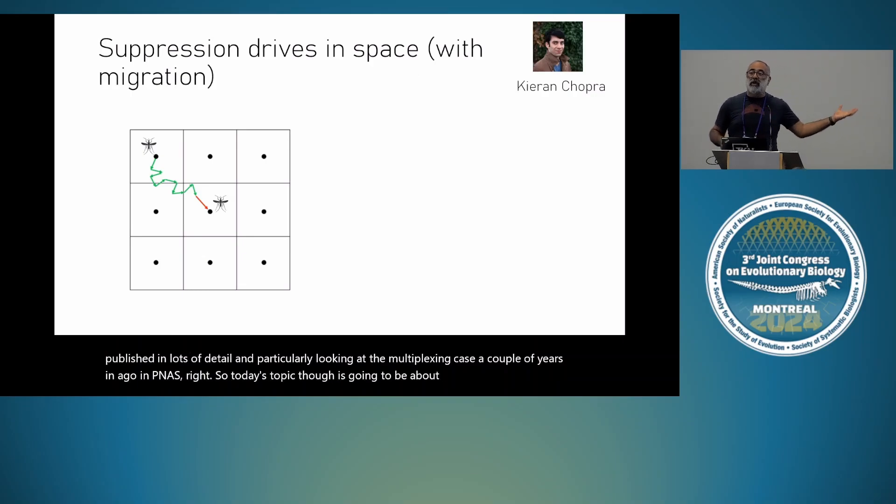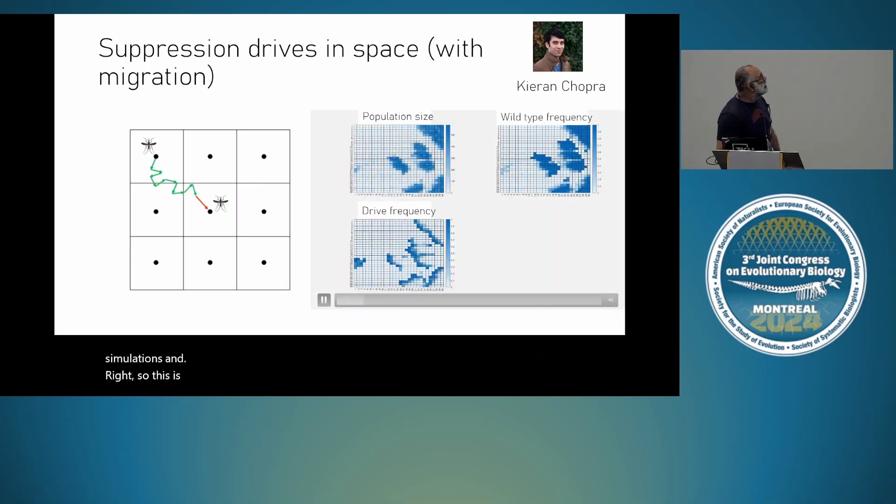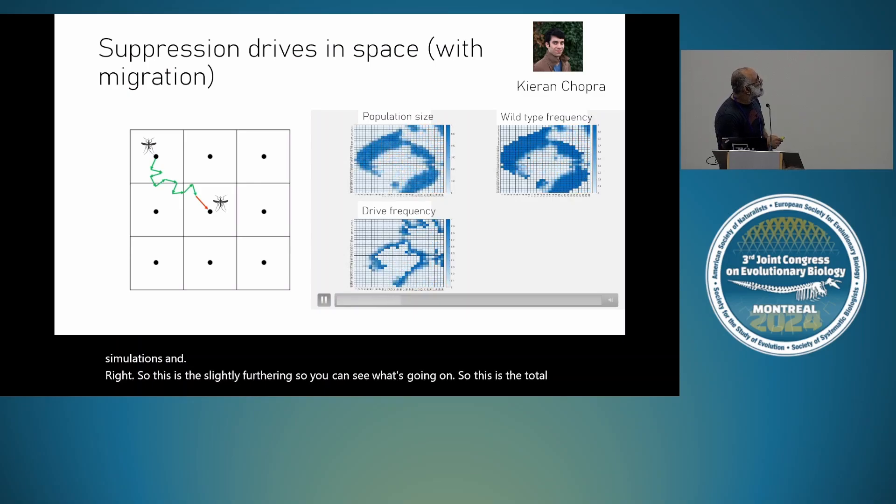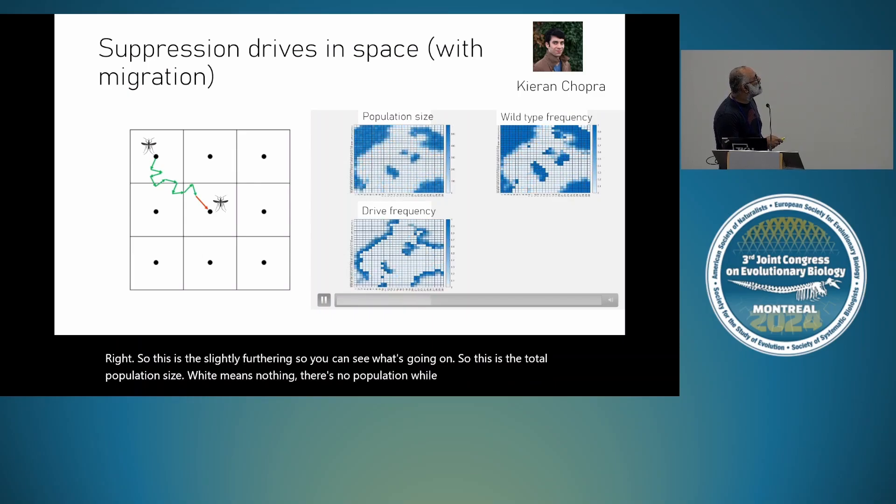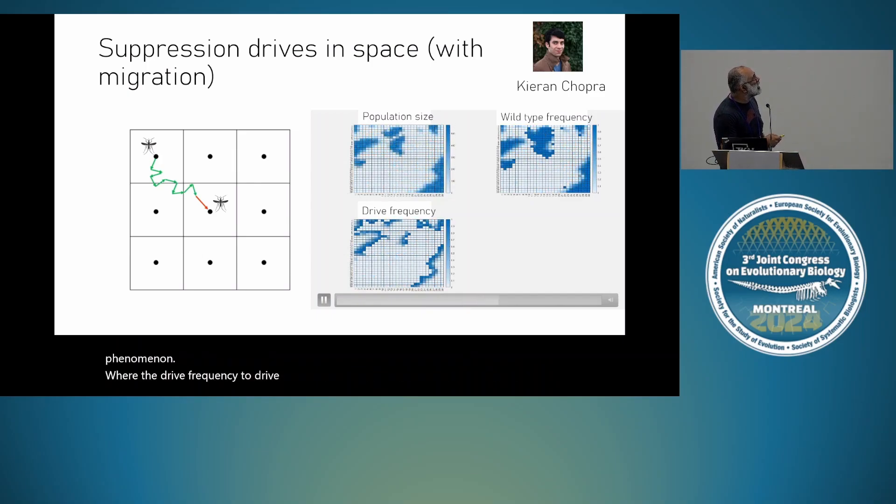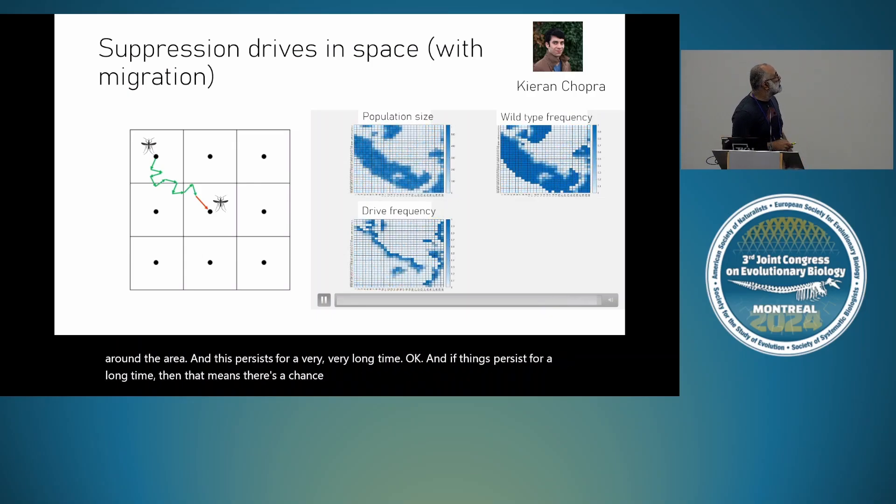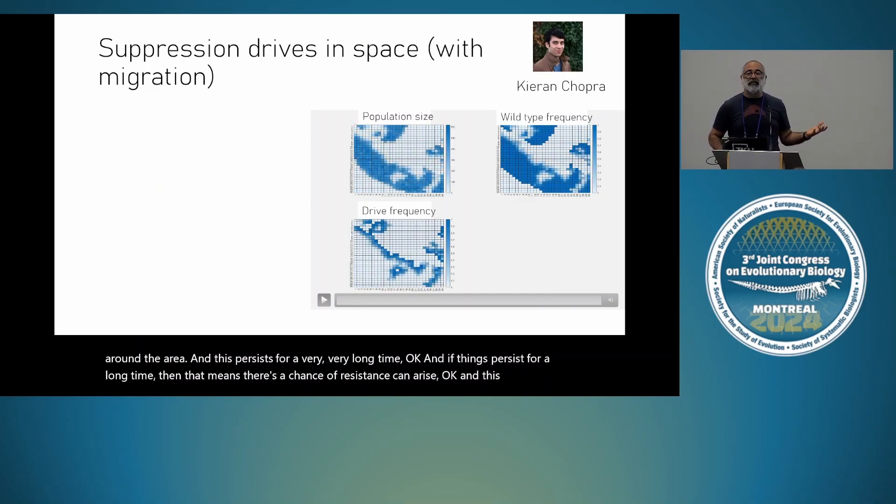Today's topic is going to be about what happens. These are well-mixed models, completely panmictic, well-mixed models. So what happens in practice? Because mosquitoes can obviously move. This is our space. We have these grid of demes, and they can move between demes between generations. This is a research system which did these simulations. So this is slightly further in, so you can see what's going on. This is the total population size. White means nothing. There's no population. Wild-type frequency and drive frequency. And what you can see is they have this sort of stochastic travelling wave phenomenon where the drive basically chases the wild-type around the population, around the area. And this persists for a very long time. And if things persist for a long time, then that means there's a chance that resistance can arise.